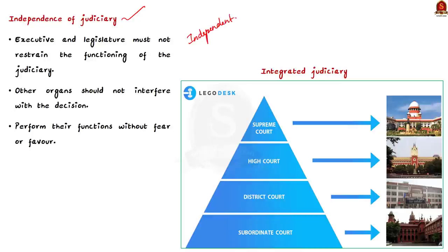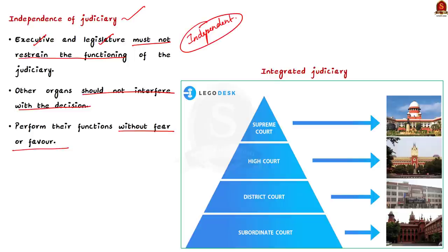Independence of judiciary means that the other organs of government — the executive and the legislature — must not restrain the functioning of the judiciary in such a way that it is unable to do justice. The other organs should not interfere with the decisions of the judiciary. Most importantly, judges must be able to perform their functions without fear or favour. These provisions ensure the independence of judiciary, and we will see some more details about how it is provided in the Indian constitution later in the discussion.